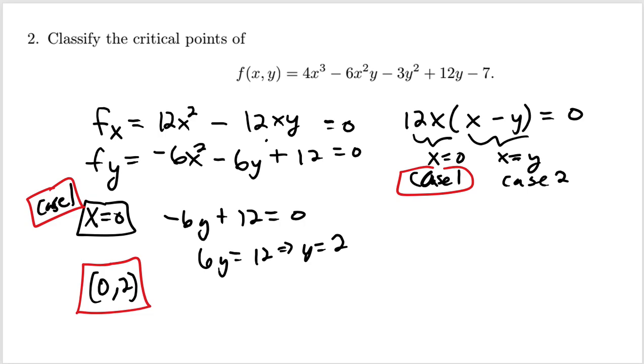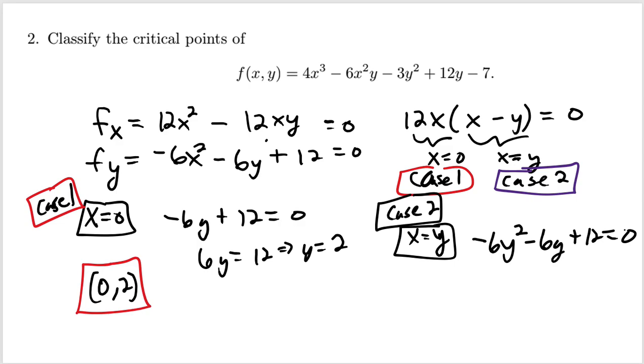Now let's move to Case 2. In Case 2, we have x is equal to y. Let's look at the ramifications of that on the y partial. We'll have -6y² - 6y + 12 = 0. It looks like a quadratic. Let's take that negative 6 out. We'll have y² + y - 2 = 0. This factors nicely.